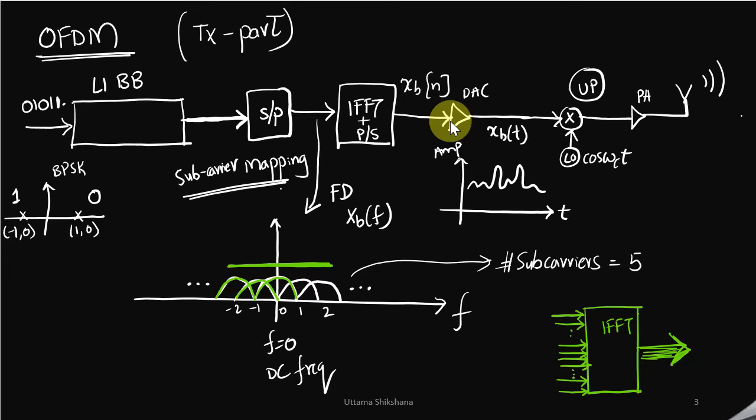This is my baseband signal in the frequency domain. Right now I consider just five subcarriers, and this frequency response will be centered around DC.